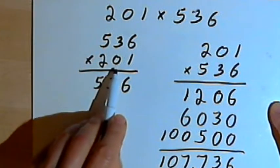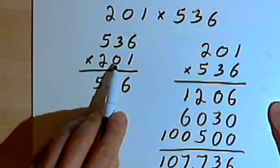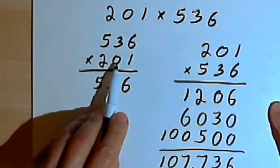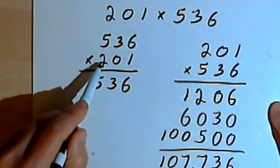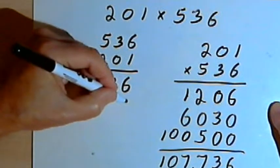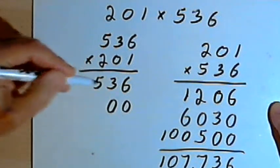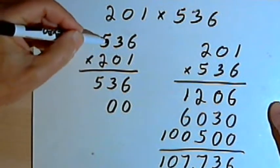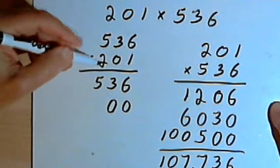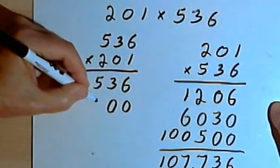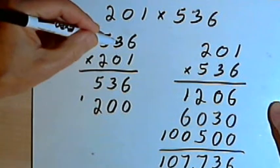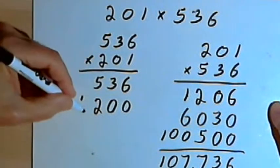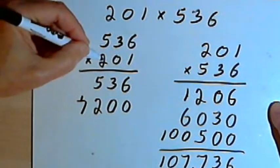After that I go on to the tens column, but there are no tens in the number 201, so I can skip that. Then I'll go on to the hundreds column. I've got a 2 here. I want to start by writing two zeros to shift my numbers over. Then I'll multiply 2 times the 536. 2 times 6 is 12. I'll write the 2 and carry a 1. 2 times 3 is 6, plus 1 more would be 7. And 2 times 5 is 10.